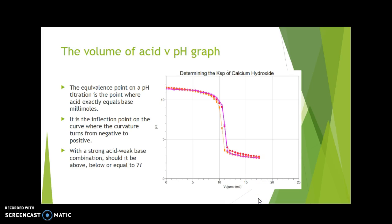With a strong acid, weak base combination as you had in this experiment, should it be above, below, or equal to 7? The answer of course is below 7, because with a strong acid and weak base you form a salt, in this case calcium chloride, that is slightly acidic.